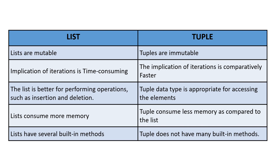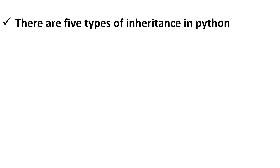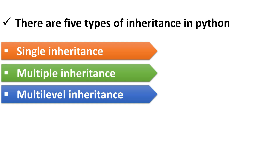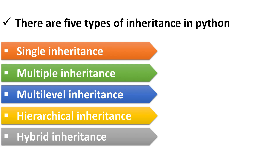The next question the interviewer asked was: what are the types of inheritance? In Python there are five types of inheritance: single inheritance, multiple inheritance, multi-level inheritance, hierarchical inheritance, and hybrid inheritance. I would suggest you prepare the definition of all types of inheritance with examples.